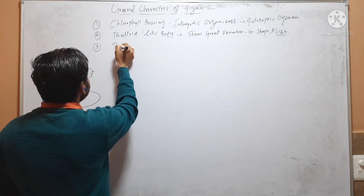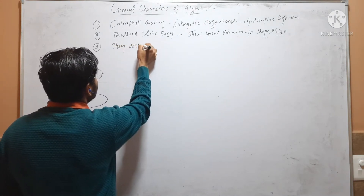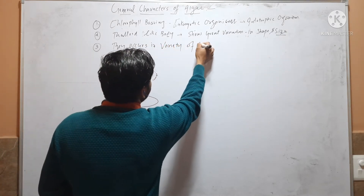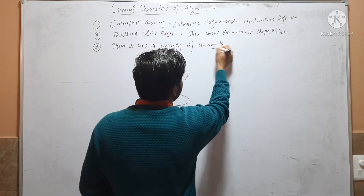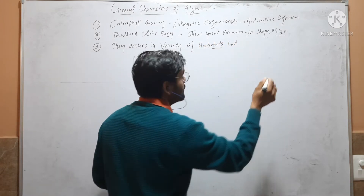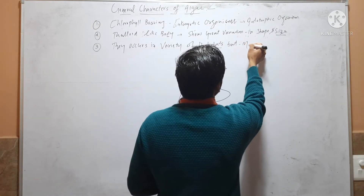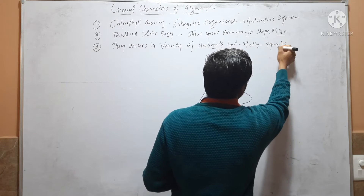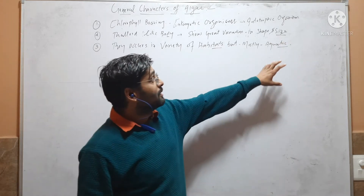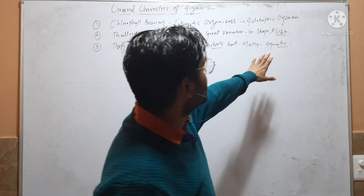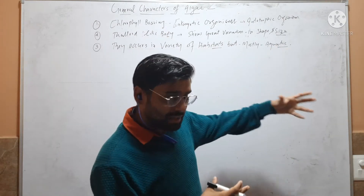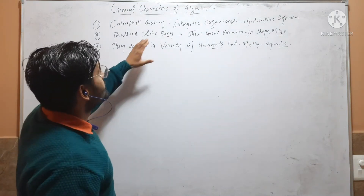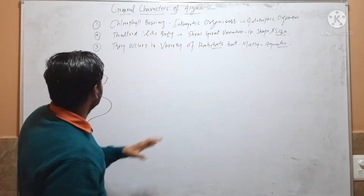The shape and size of the thallus shows great variation among algae. Third, algae occur in a variety of habitats, but mostly they are aquatic. Most algae have their habitat in aquatic environments.